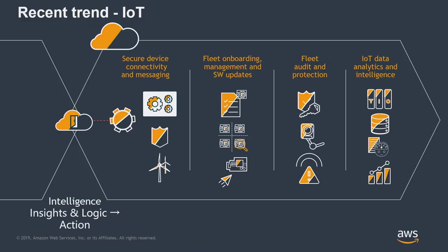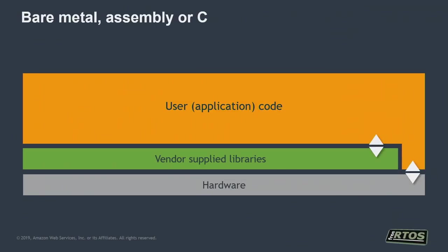Before we can get to that value, there is what we call the undifferentiating functionality — functionality that anyone connecting has to have in place first. Cloud companies try to help people get to value as quickly as possible by providing things like security, encryption, authentication. AWS has mutual authentication: the device authenticates the server and the server authenticates the device. Then there's onboarding, provisioning, lifecycle management, over-the-air updates, all this kind of thing. Once you've connected, you can get to value as quickly as possible.